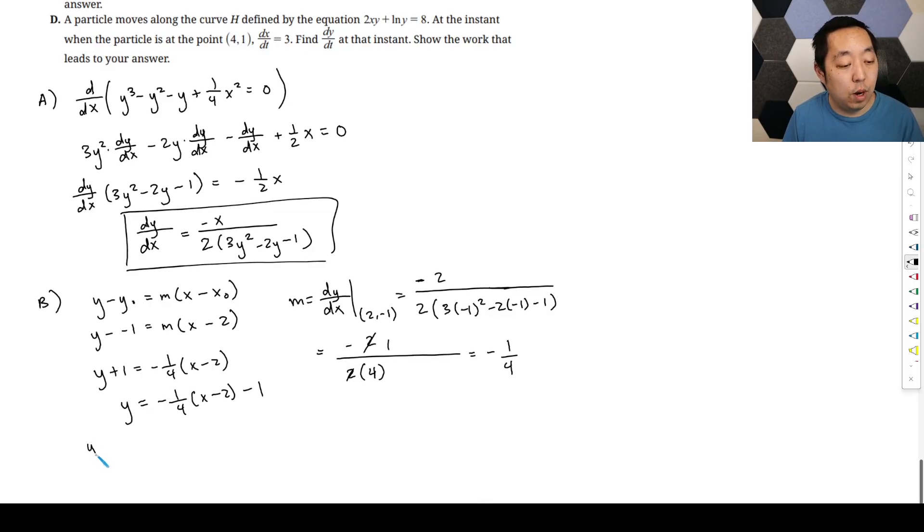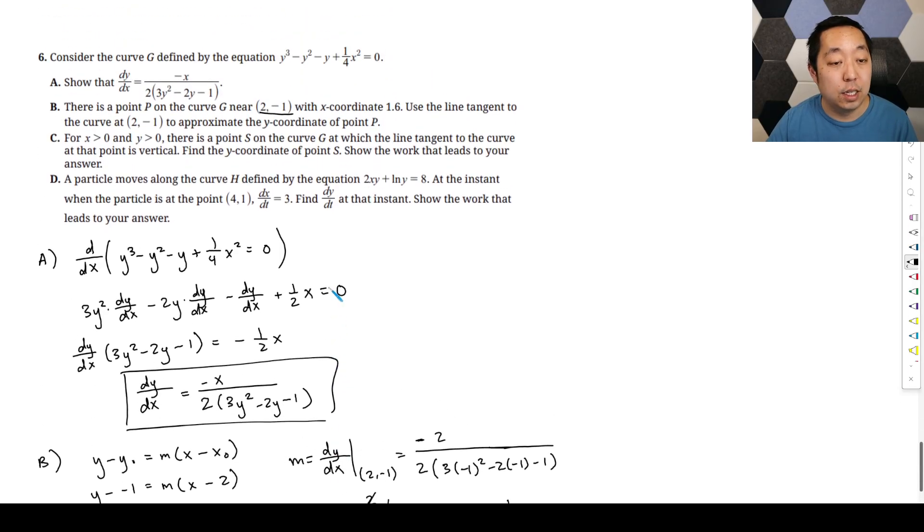And so the approximation that we're doing is to approximate x coordinate 1.6. So we're going to say y of 1.6. So we're just going to plug in 1.6 into here, negative 1 fourth times 1.6 minus 2 minus 1. And that is our approximation. It's just the y value on that tangent line. You can use a calculator to simplify that, it's not necessary, though.